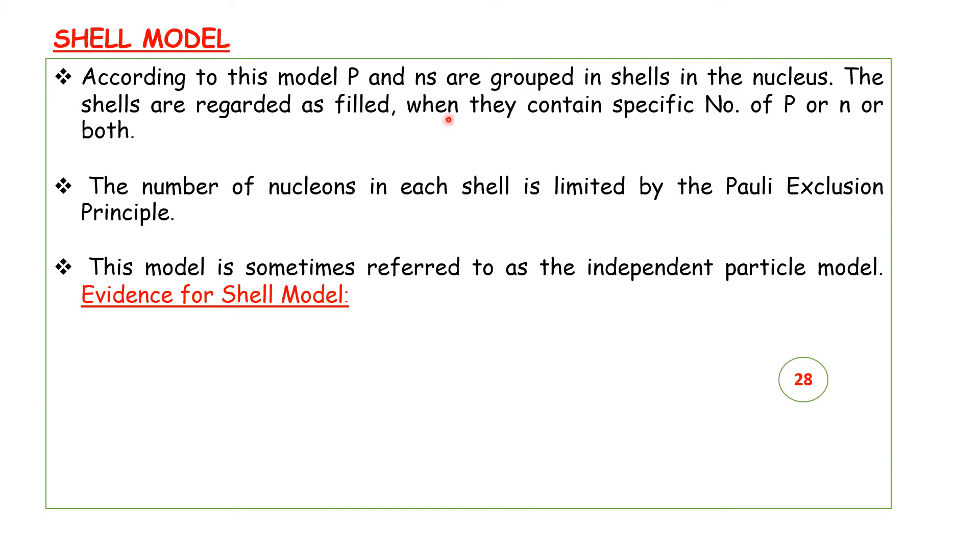In the shell model, the number of nucleons in each shell is limited by the Pauli Exclusion Principle. This model is sometimes referred to as the independent particle model.